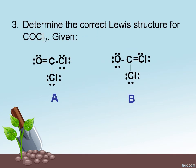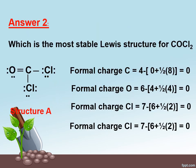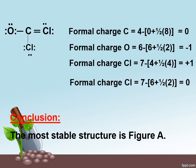Number three, determine the correct Lewis structure for COCl2. As we have calculated the formal charges for carbon, oxygen and chlorine, it turns out that structure A has zero formal charges and structure B has negative one formal charge for oxygen, positive one formal charge for chlorine. Making the most stable structure for COCl2 is figure A.